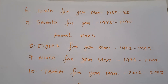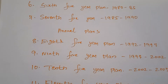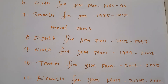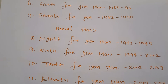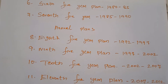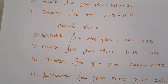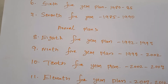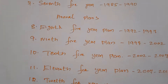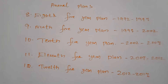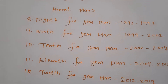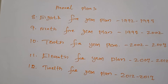Our nation has implemented 12 five-year plans. The 12th five-year plan is considered the last five-year plan. Now the Planning Commission is no longer available; instead, NITI Aayog exists in our nation. Under every five-year plan, certain achievements were targeted. The first five-year plan was implemented from 1951 to 1956.